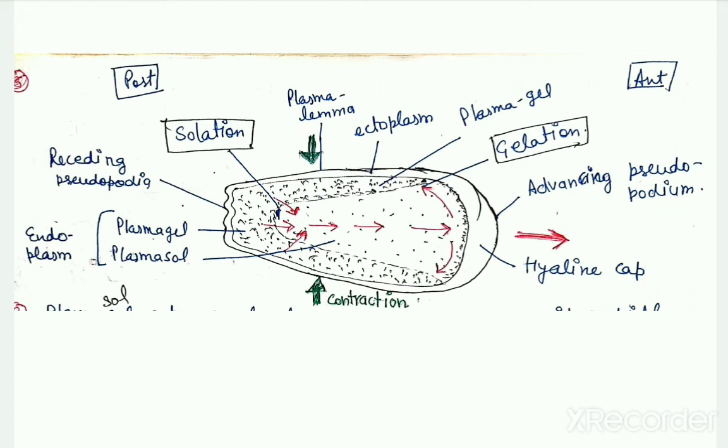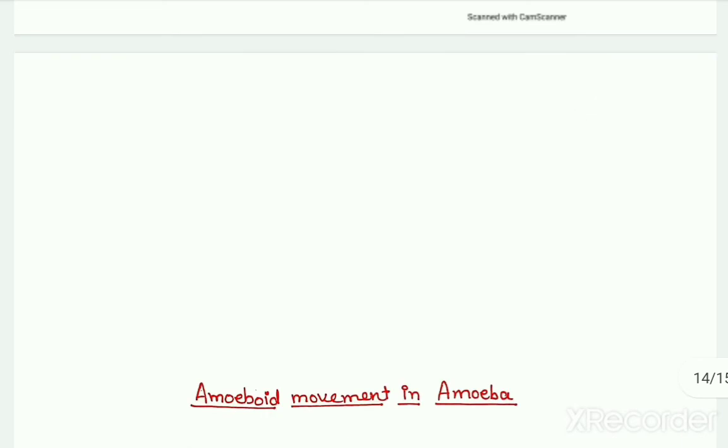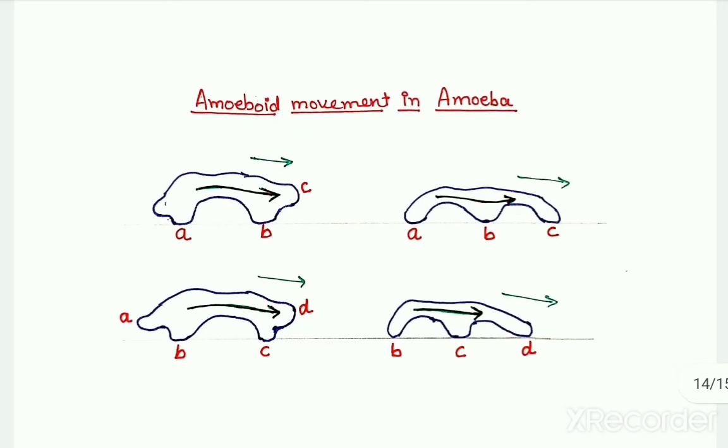This is the mechanism explained by Hyman in the sol-gel theory. Now let us take, with help of this simple diagram, the process of amoeboid movement in case of amoeba.